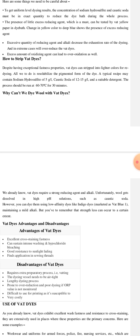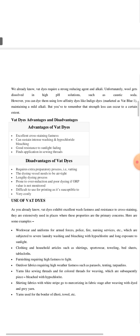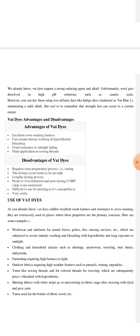Now the exception for vat dye: we can't dye wool with vat dye. What is the reason? We already know that vat dyes require a strong reducing agent in alkali, like hydrosulfite and caustic soda. Unfortunately, wool gets dissolved in high pH solutions, so we cannot dye them using vat dye. We can dye them using indigo dye, which is a member of the vat dye family. We can dye them using low affinity dyes, maintaining a mild alkali.